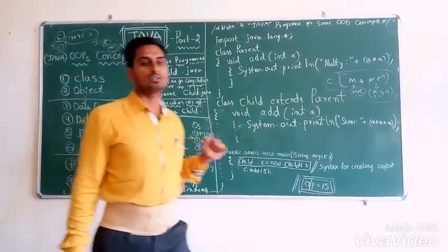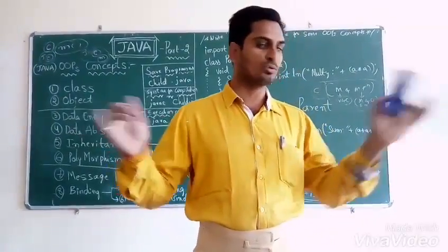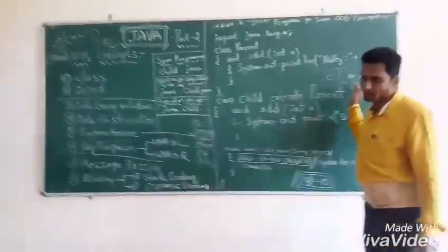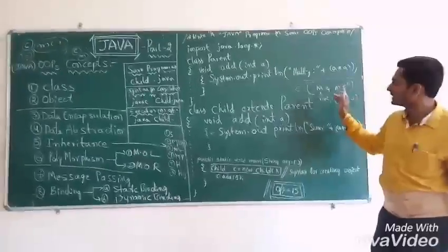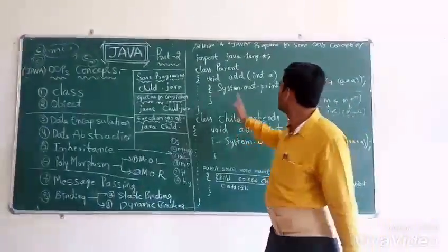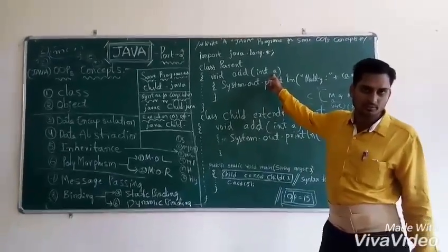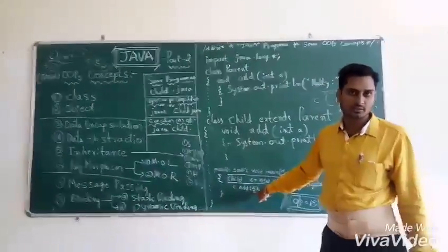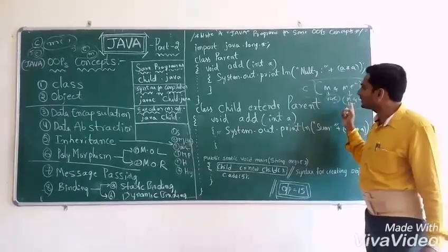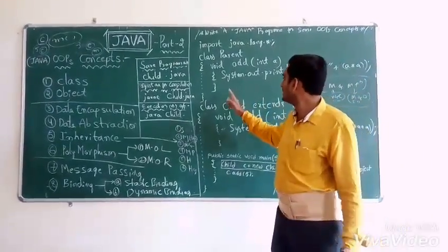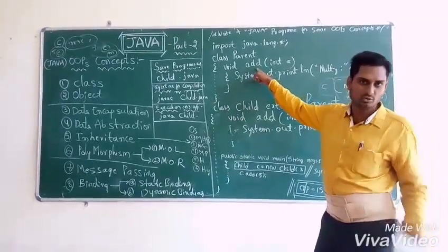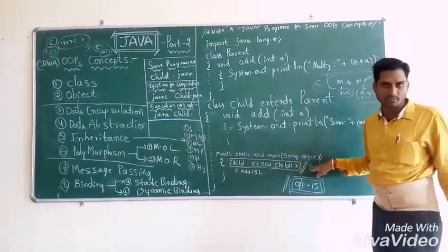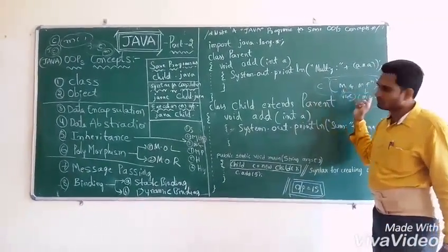The first concept of OOPS is Class. Generally, class is a collection of students. But technically, class is a collection of members and member functions. Members means variables and constants. Variables means which is changing; constants means which will not change. Member functions are methods and objects — methods are user-defined, and objects are created using class syntax.